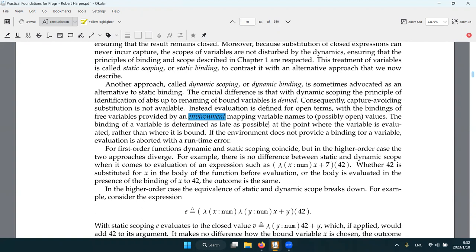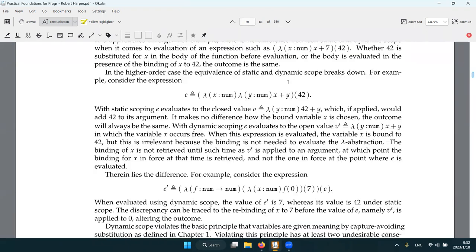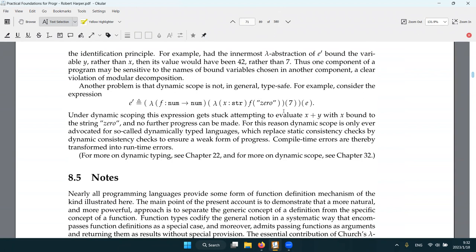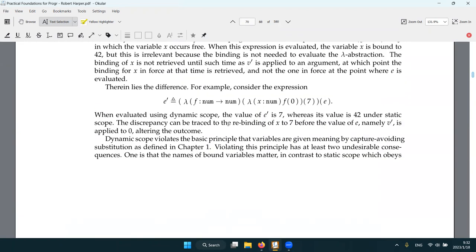Basically, the idea is we have a runtime environment and the binding of variable is determined at least as late as possible. It's the point where the variable is evaluated rather than where it is bound. And of course, if the environment does not provide a binding for that variable, we have a runtime error. Already sound pretty bad. Does it even have semantics for this? No, because we don't even have enough mechanism to define dynamic scoping. So maybe defer this to chapter 22 and chapter 32.